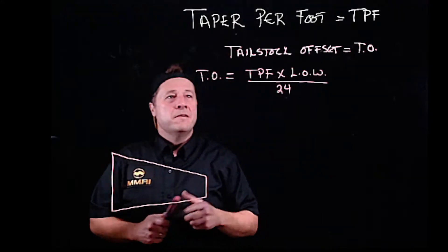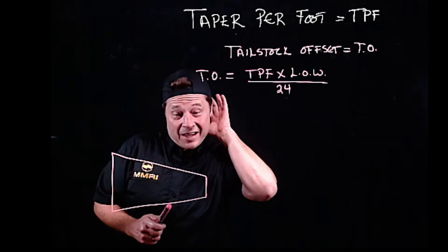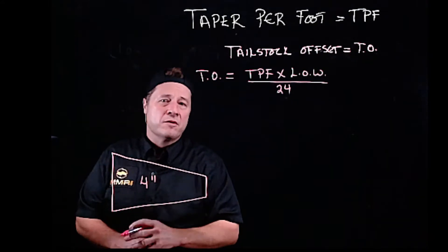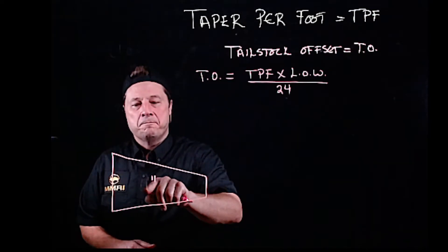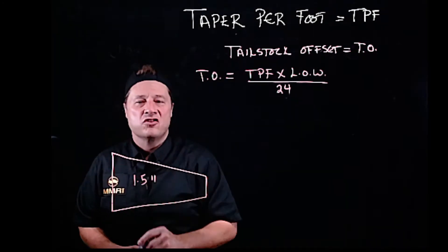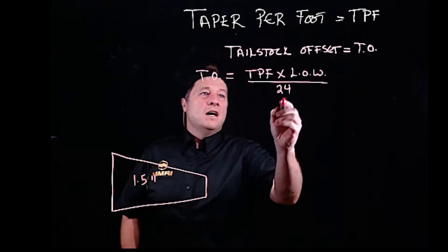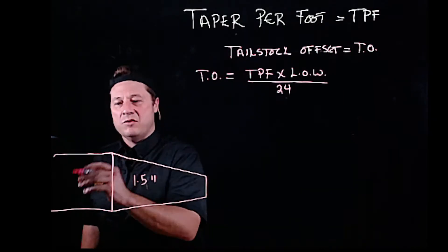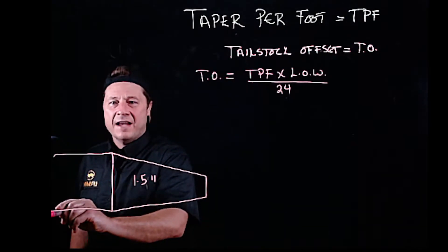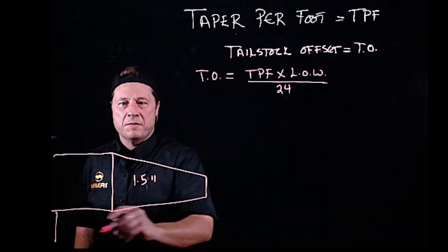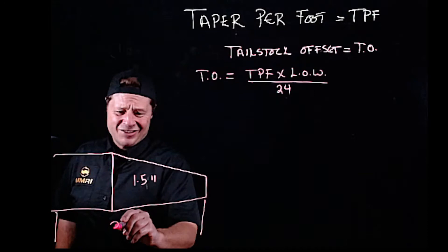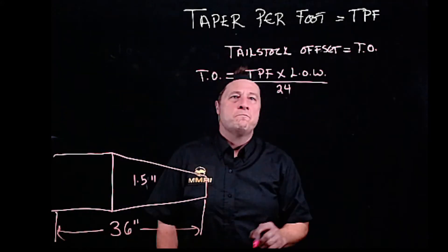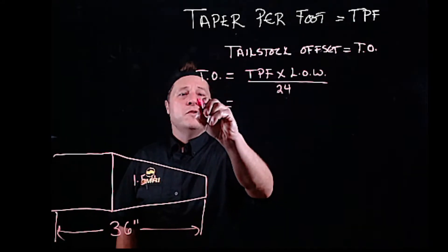Let's imagine we solve the taper per foot. We'll say it's a 1.5 inch taper per foot. We also need to know how long is the work. My part continues on. Let's say that measurement of the whole length of the part is 36 inches long; that's how long my bar stock is.